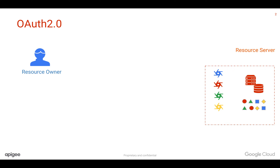The second one is the resource owner, who actually owns the data. It can be a user who is generating the data that gets stored in the resource server. And the third one is the client application, which can be a simple mobile application or web application trying to get access to these APIs.